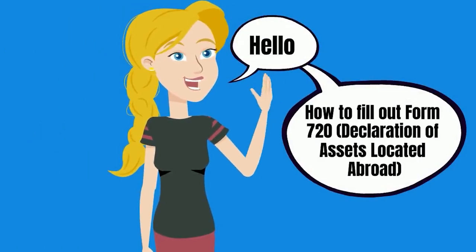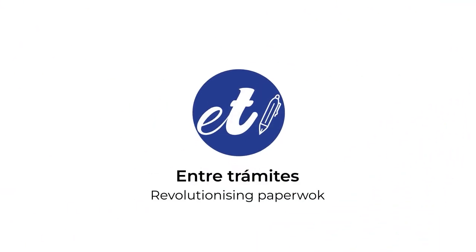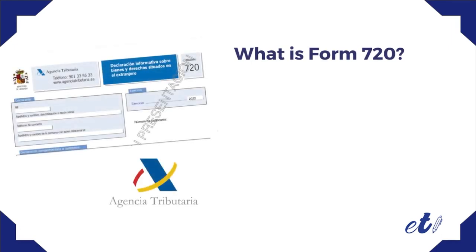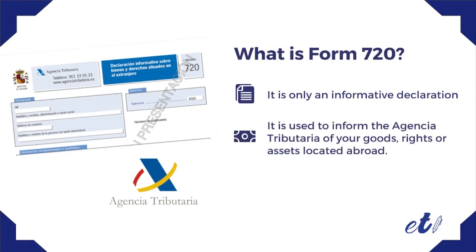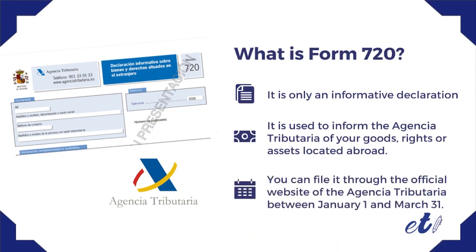Hello, today in Entre Trámites you will learn how to file Modelo 720. This form is an informative declaration, which means that its presentation does not imply the payment of a tax and it only serves to communicate to the tax agency that you have rights, goods, or assets located abroad. You can file it through the official website of the Agencia Tributaria between January 1st and March 31st.